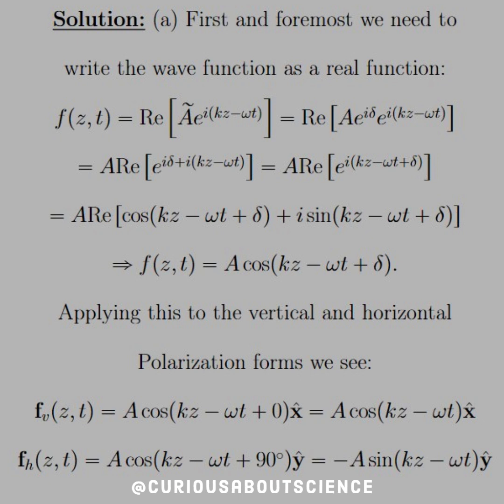Applying this to the vertical and horizontal polarization forms, we see that we get F of V is equal to the same A cosine, but the delta or phase angle is 0 for the vertical and 90 for the horizontal. As you know, a 90 degree shift in cosine waves are just a negative sine wave. Hence, we have F of V is equal to A cosine and F of H is equal to negative A sine in the X and Y directions, respectively.